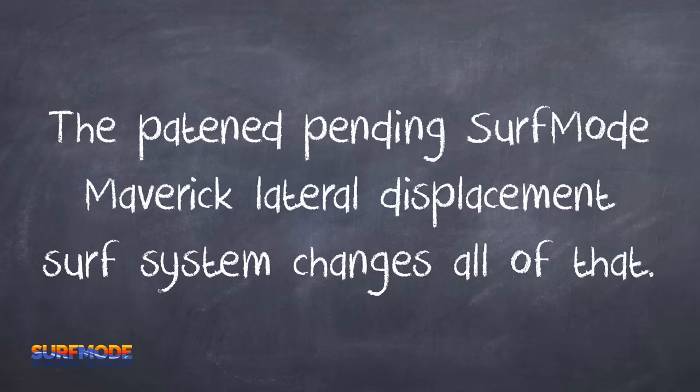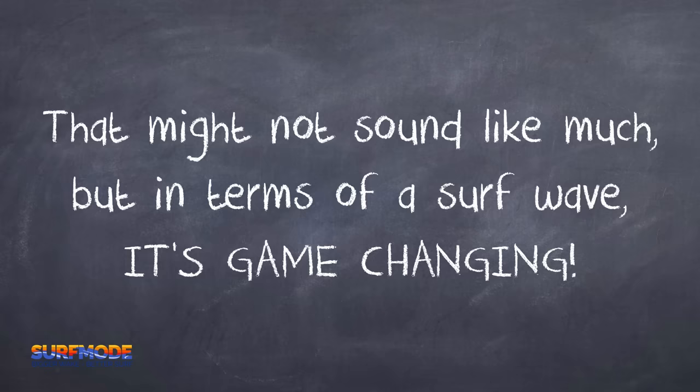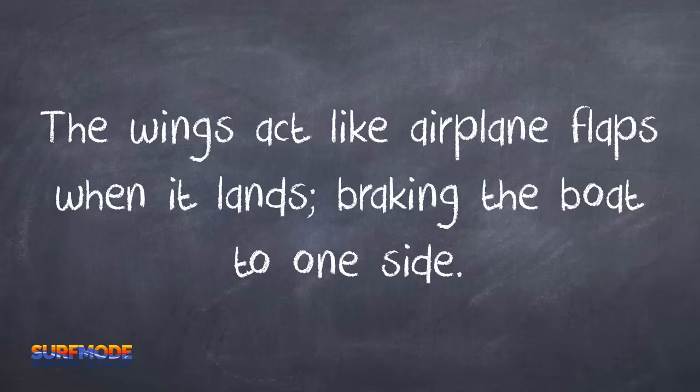The patent-pending Surf Mode Maverick lateral displacement surf system changes all of that. Surf Mode Maverick's lateral displacement spins your boat by about 4 degrees. That might not sound like much, but in terms of a surf wave, it's game changing. The wings act like airplane flaps when it lands, braking the boat to one side.